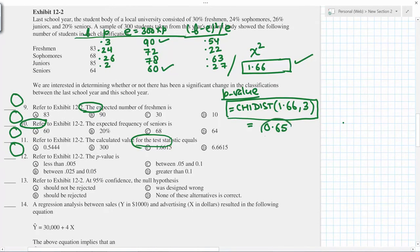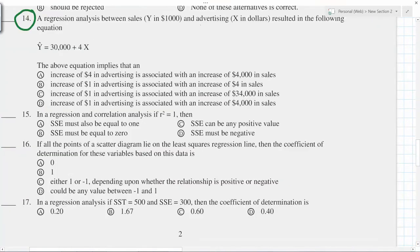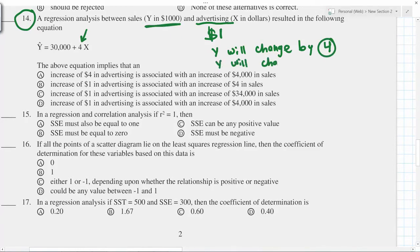Number 13: p equals 0.65 and alpha equals 0.05. If advertising changes by one dollar, then because you have four, y will change by four. But y is in thousands, so in terms of that, y will change four thousand dollars. So this will be the correct answer.